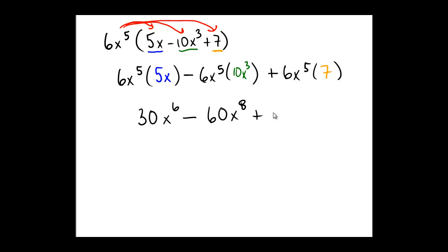Plus 6 times 7, which is 42. And we only have the initial 5 copies of x here. So the final answer would be 30x to the 6th minus 60x to the 8th plus 42x to the 5th.